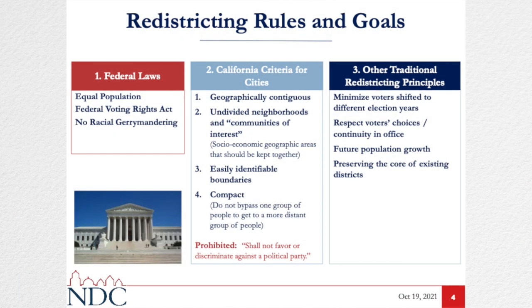Third: easily identifiable boundaries. This is the principle that districts should be easy for residents to understand. To the extent that we can follow major roads, canals, or other natural and man-made boundaries, voters should be able to understand — for example, if you live west of this park, you're in District 1, and if you're east of this park, you're in District 2. If we have to jog through a neighborhood where voters with odd addresses are in one district and even addresses on the same street are in another, we're probably not following the most easily identifiable boundary.